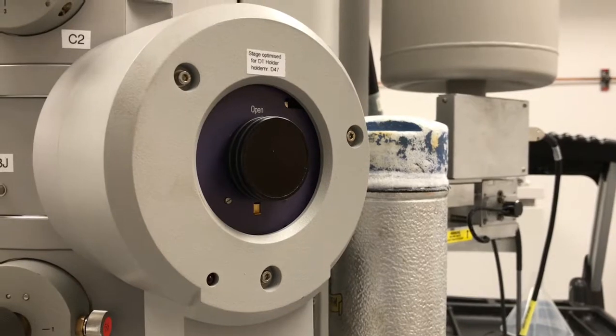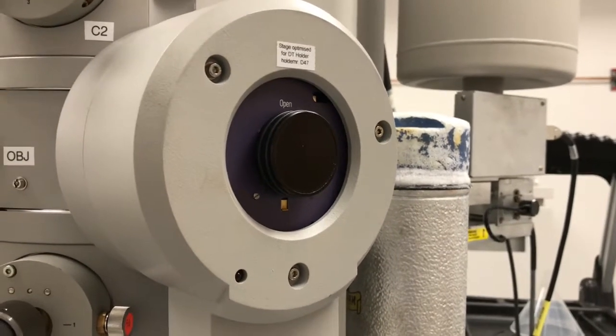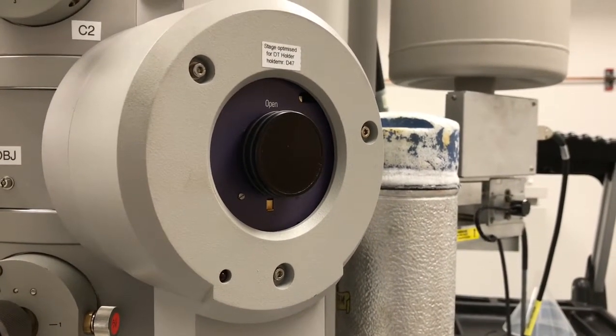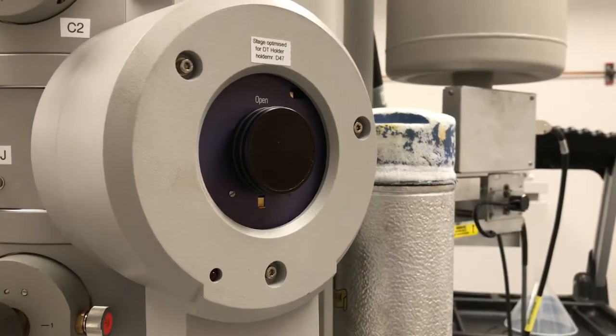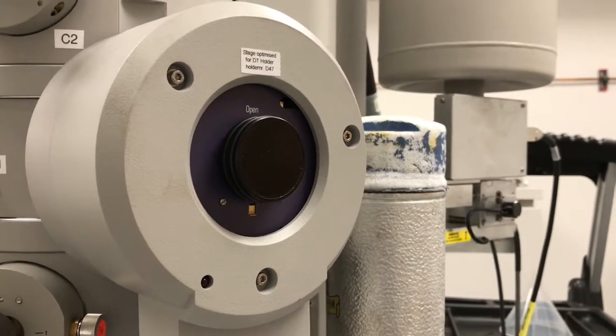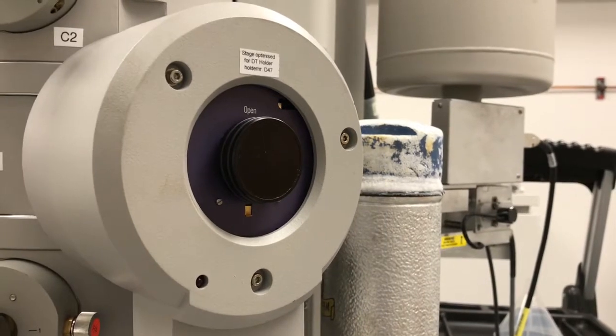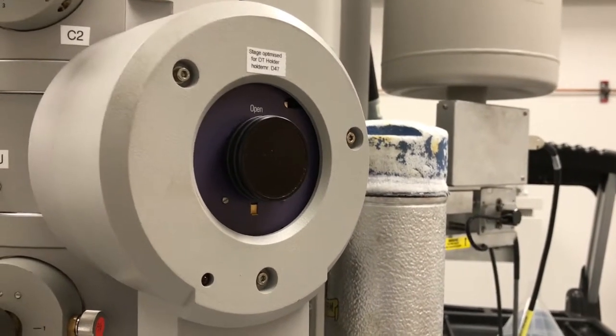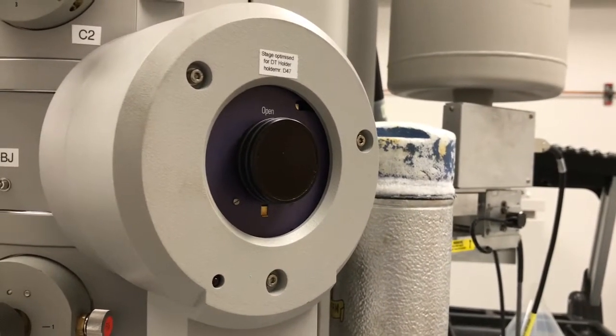To extract the holder, the basic process is that the holder is pulled out until a stop is felt, then it's turned clockwise approximately 120 degrees until another stop is felt, and then it is pulled all the way out.